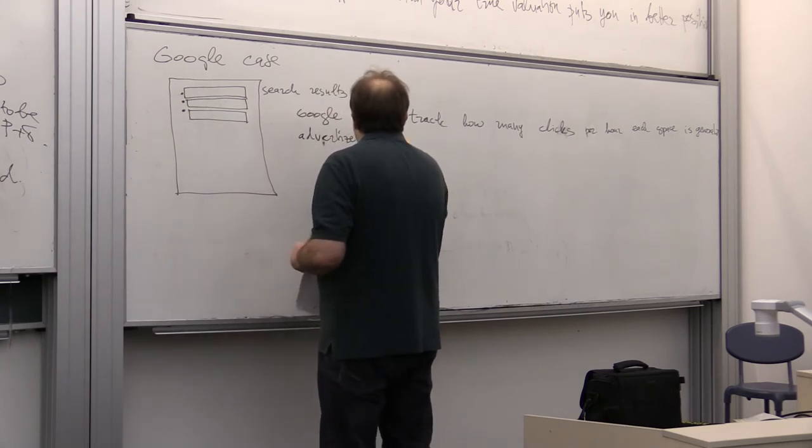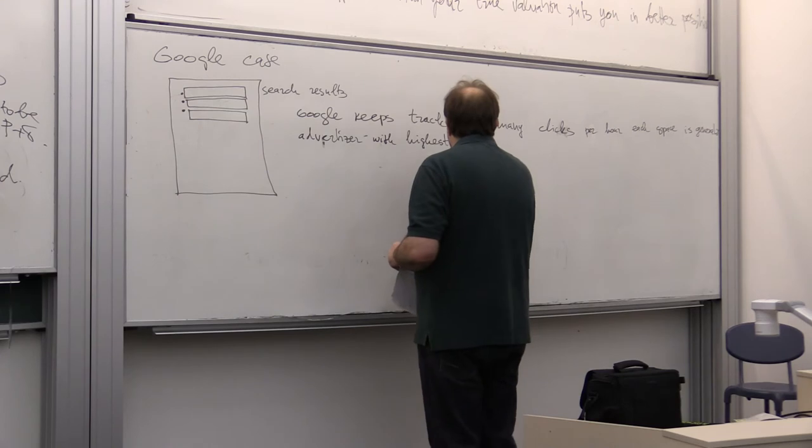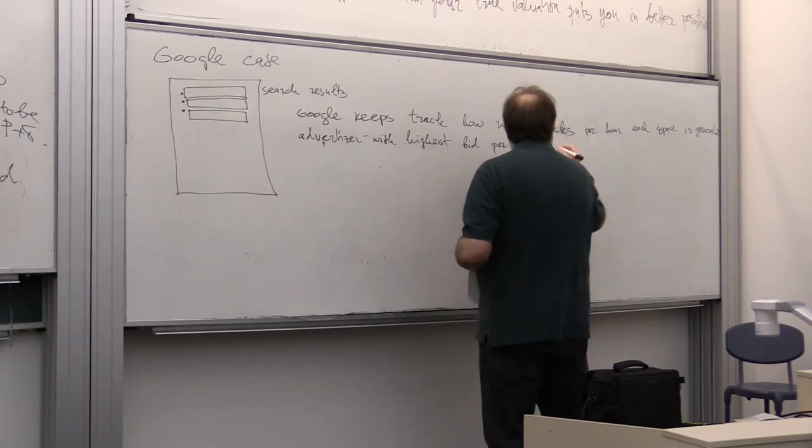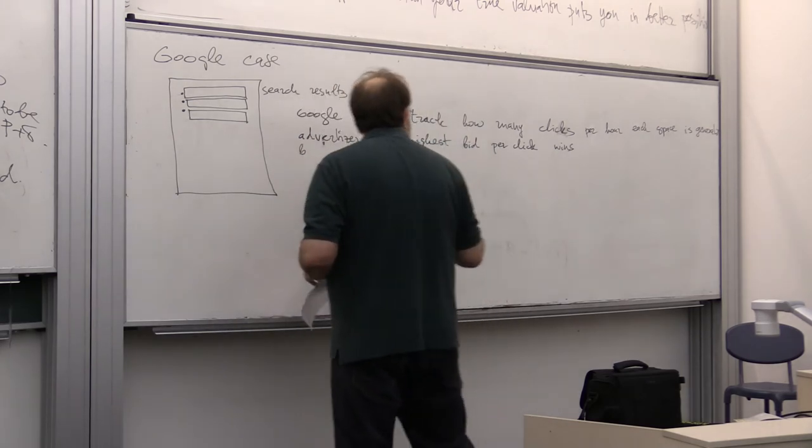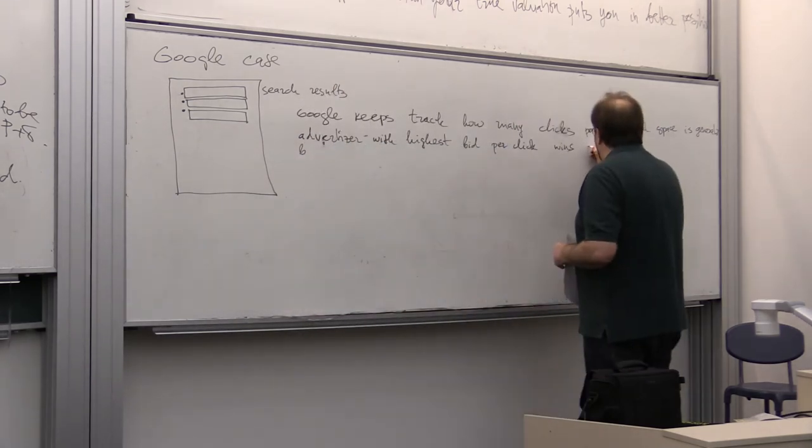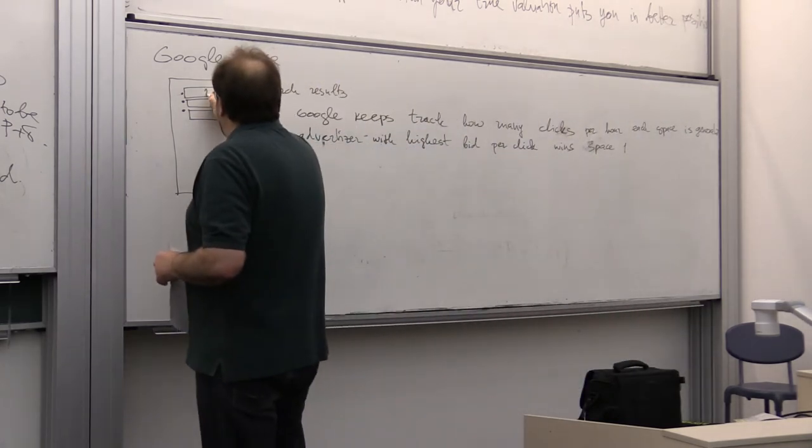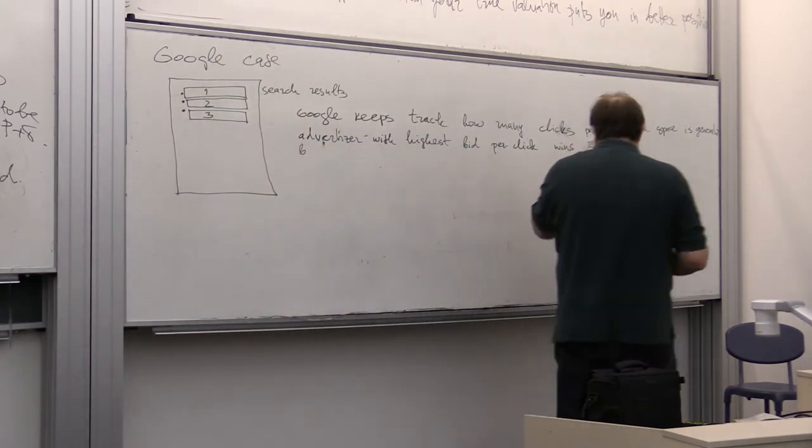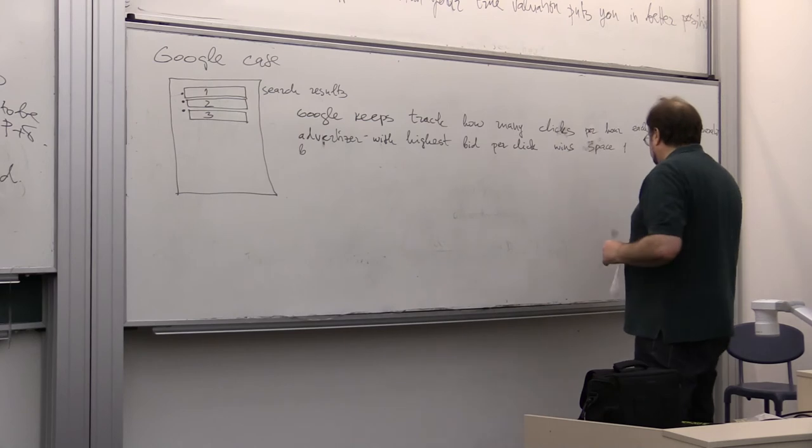Right? So, bidders bid for all of these spaces, right? So, there are multiple items that can be won. But Google still maintains, so to speak, generalized second highest bid. So, advertisers with the highest bid per click wins space one. So, this is space one. This is space two. Space three. Sometimes, usually, you have three or four like this. Or sometimes, even more. So, advertisers with the highest bid per click wins space one.